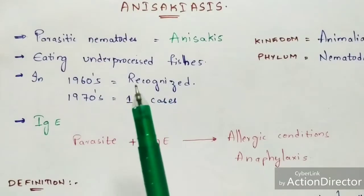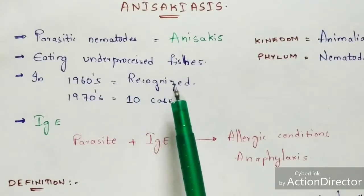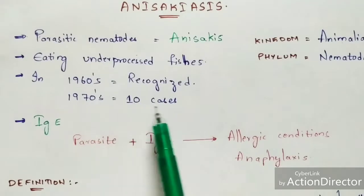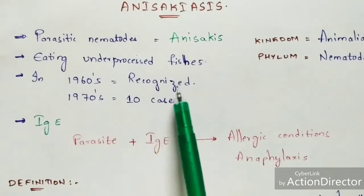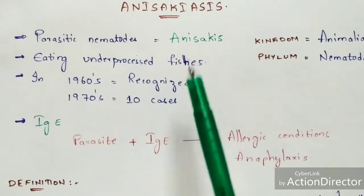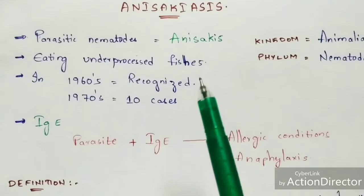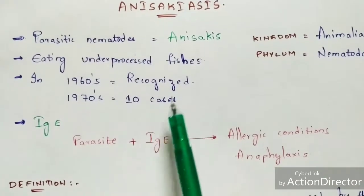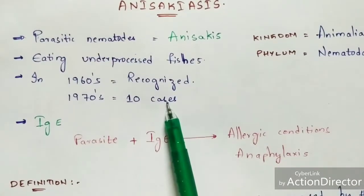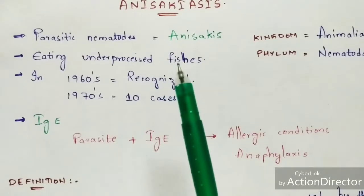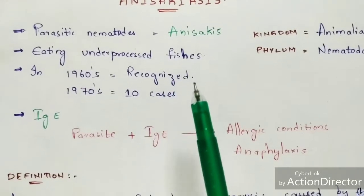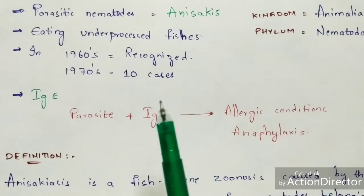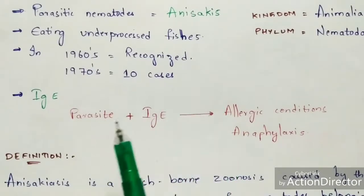In the 1970s, 10 cases were filed based on this disease known as anisakiasis. These 10 cases were filed in Japan because this disease is mostly seen in Japan.